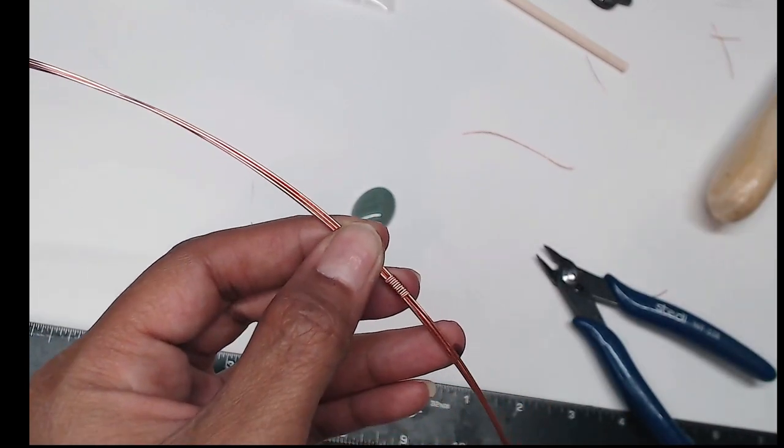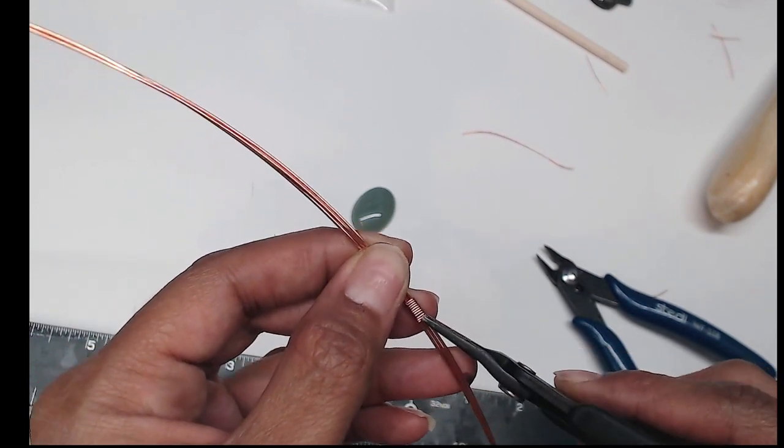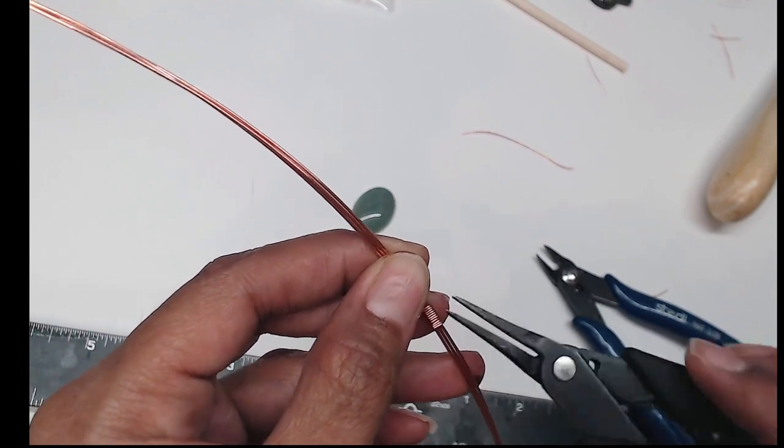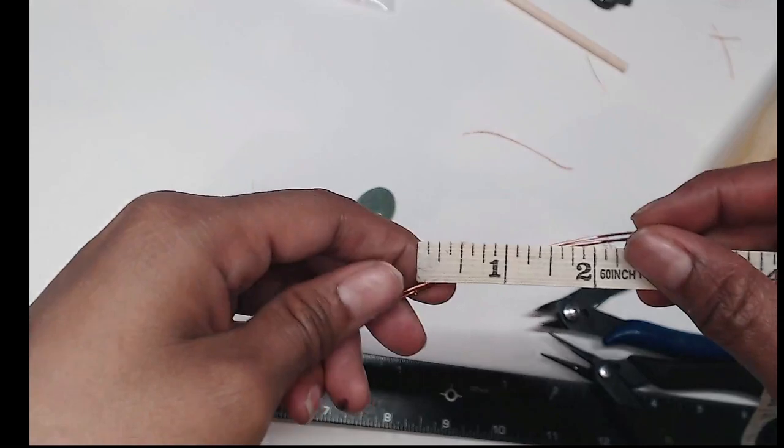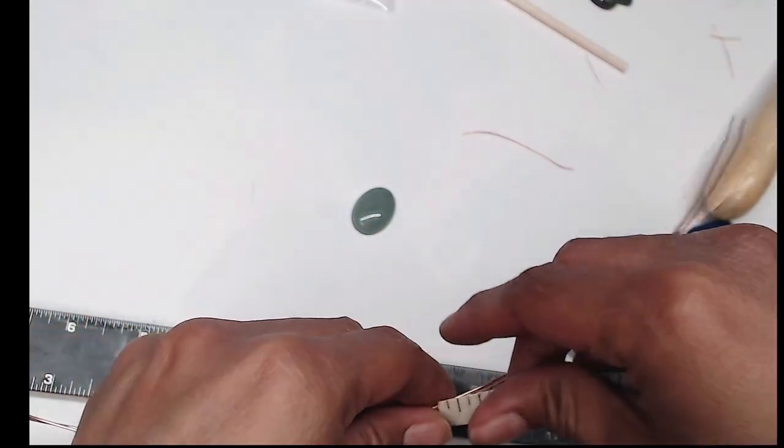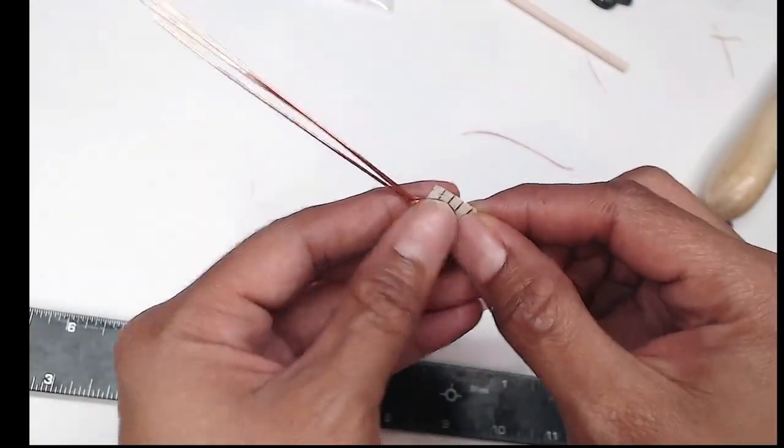Go ahead and grab one of your pliers and clamp it down. I'm just measuring it again to make sure, because at this point you can still kind of slide the connection around to get an even measurement on both sides.